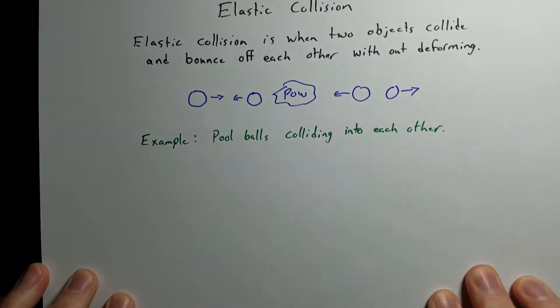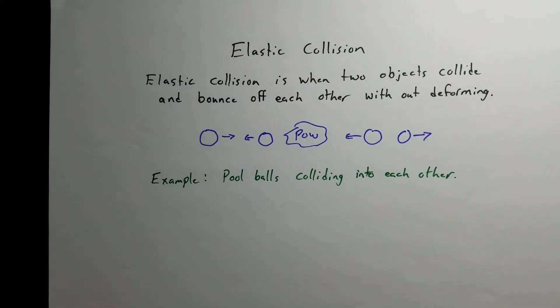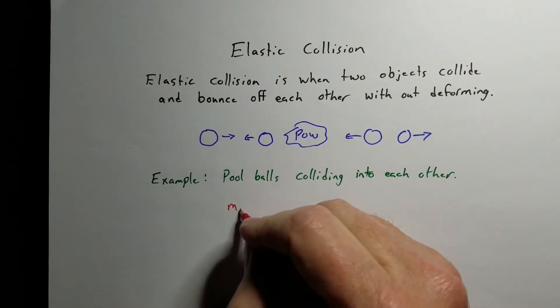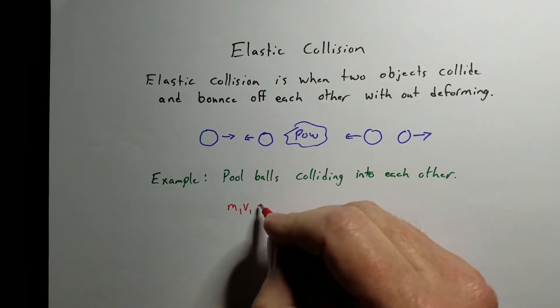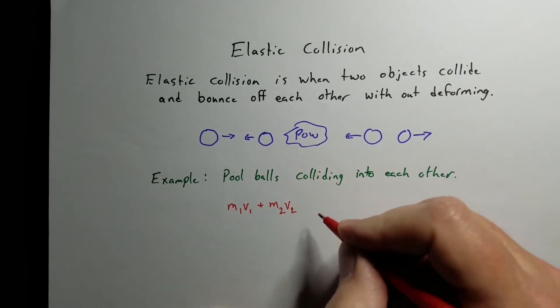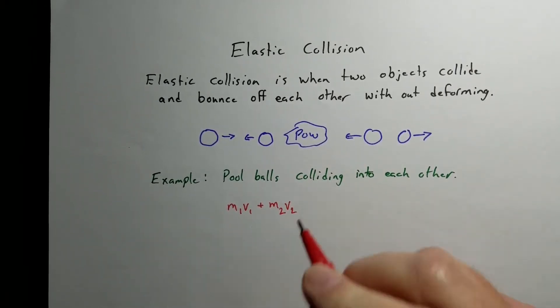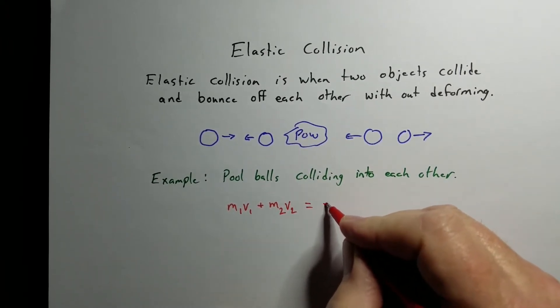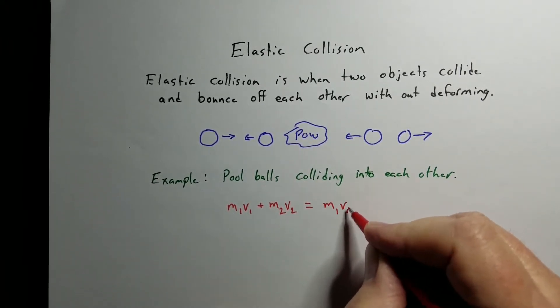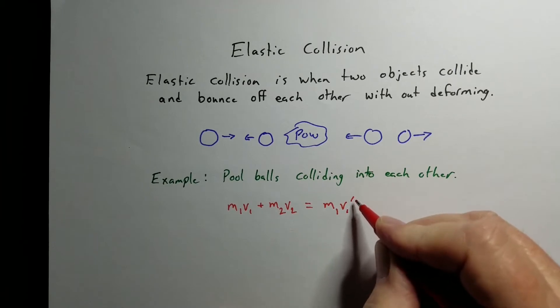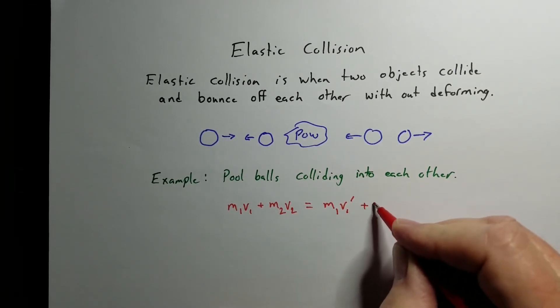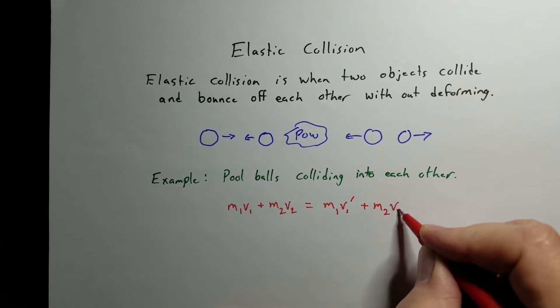For elastic collisions there is a generic equation we can use. The momentum of the first object plus the momentum of the second object — because momentum is conserved — the momentum before has to equal the momentum after the collision. That little prime means after the collision, so we have the momentum of object one after plus the momentum of object two after.